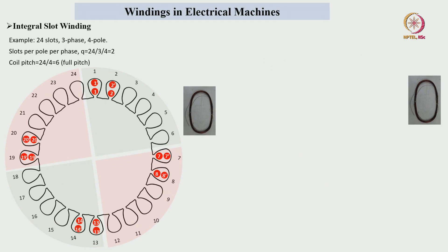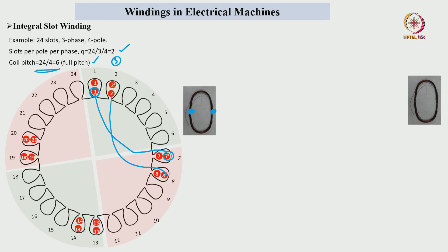Integral slot winding means slots per pole per phase gives an integer — 2, 3, or any integer. Whether it is full pitch or short pitch, we make the coil pitch accordingly and place coil sides as per the winding diagram. For full pitch double layer winding, the first coil side is placed in slot 1 top side and the second coil side in slot 7 bottom side. Then 2 to 8-dash, 7 to 13-dash, 8 to 14-dash, and so on. Winding diagrams will be discussed in detail in coming lectures.